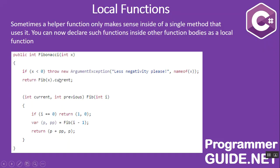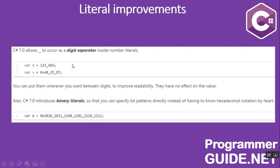Literal improvements. C# 7.0 allows using an underscore as a digit separator inside number literals — for example, t = 123_456, or a hexadecimal value like 0x_AB_CD_EF. You can put them wherever you want between digits to improve readability; they have no effect on the value. C# 7.0 also introduces binary literals so you can specify bit patterns directly instead of having to know hexadecimal notation, for example b = 0b_1010_1011.